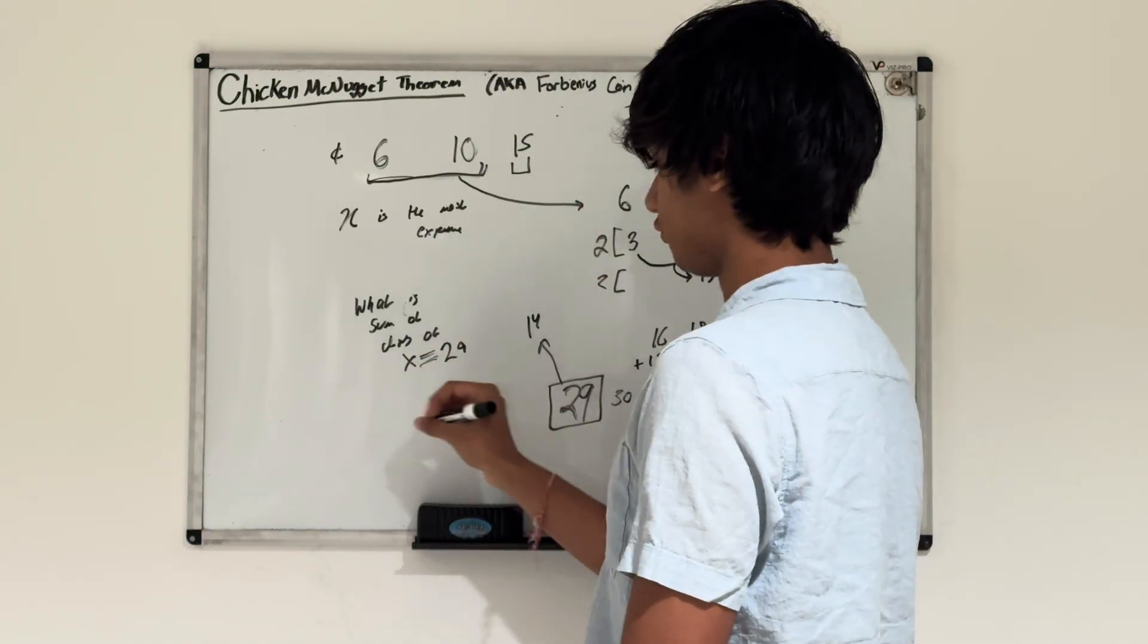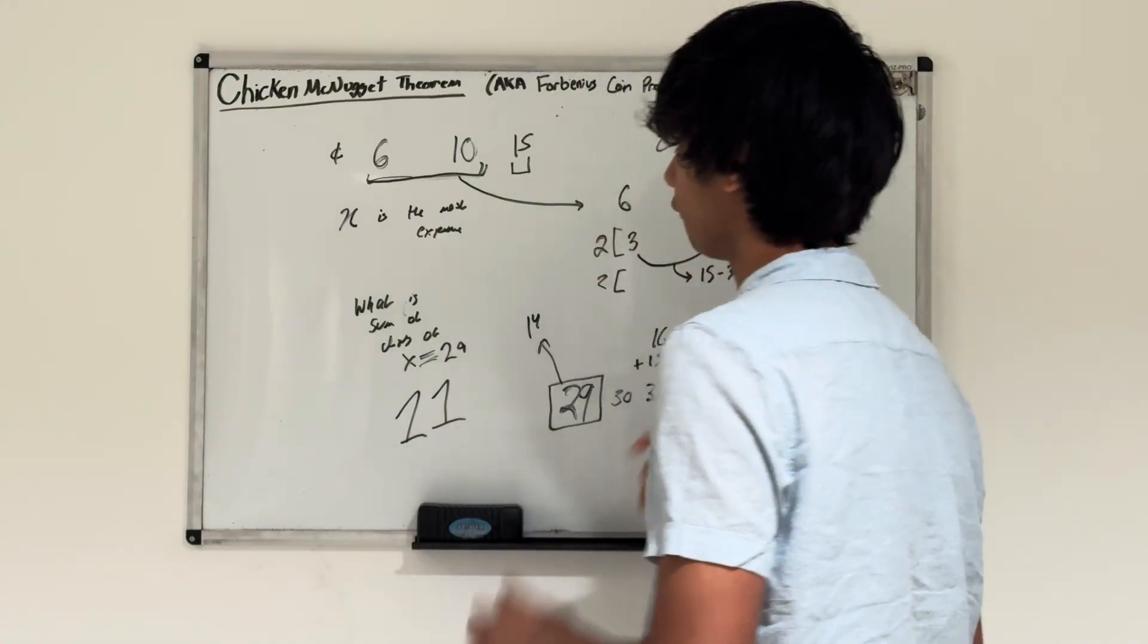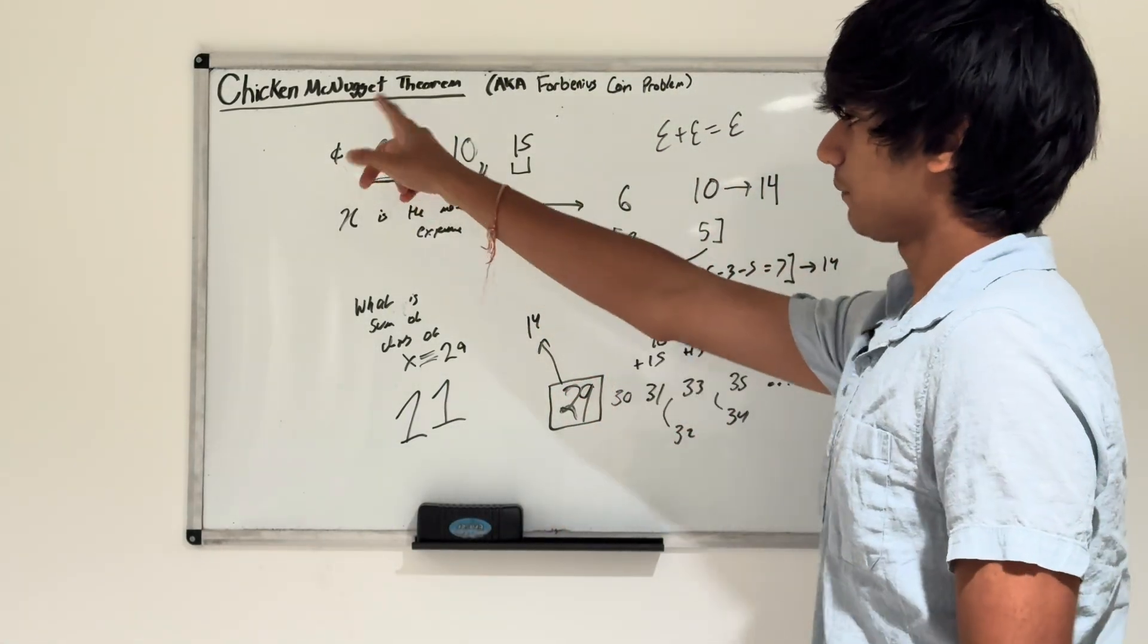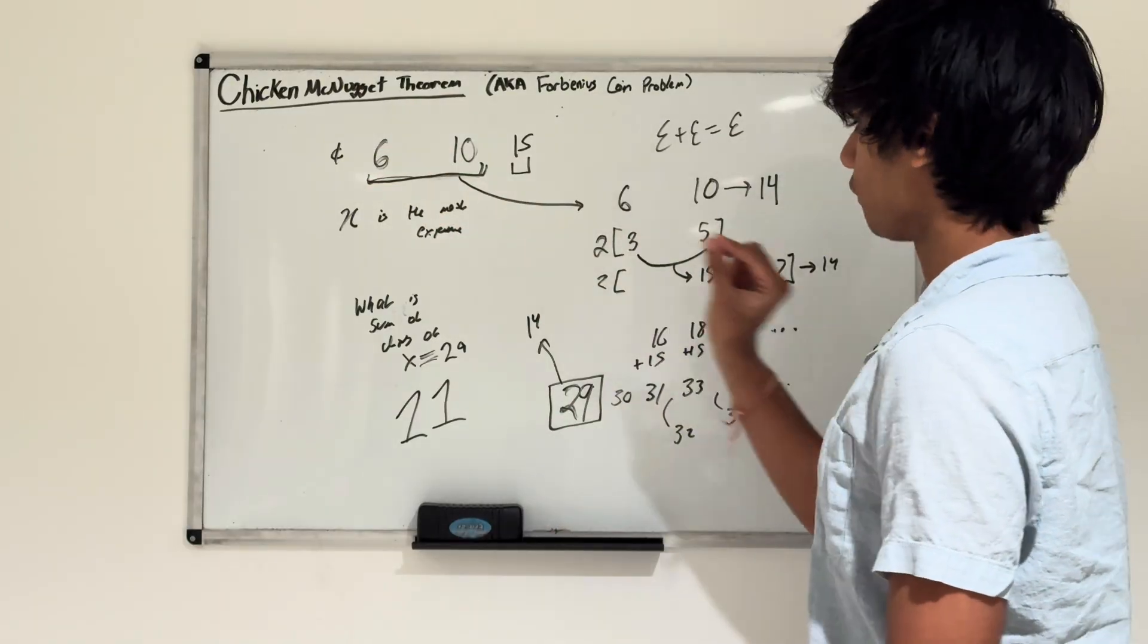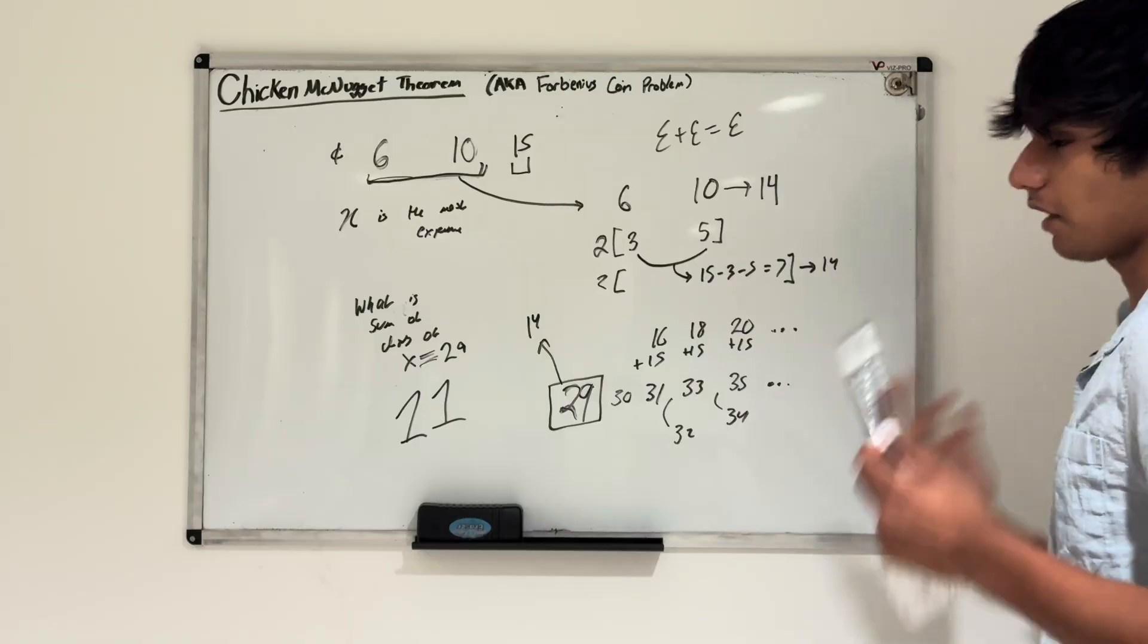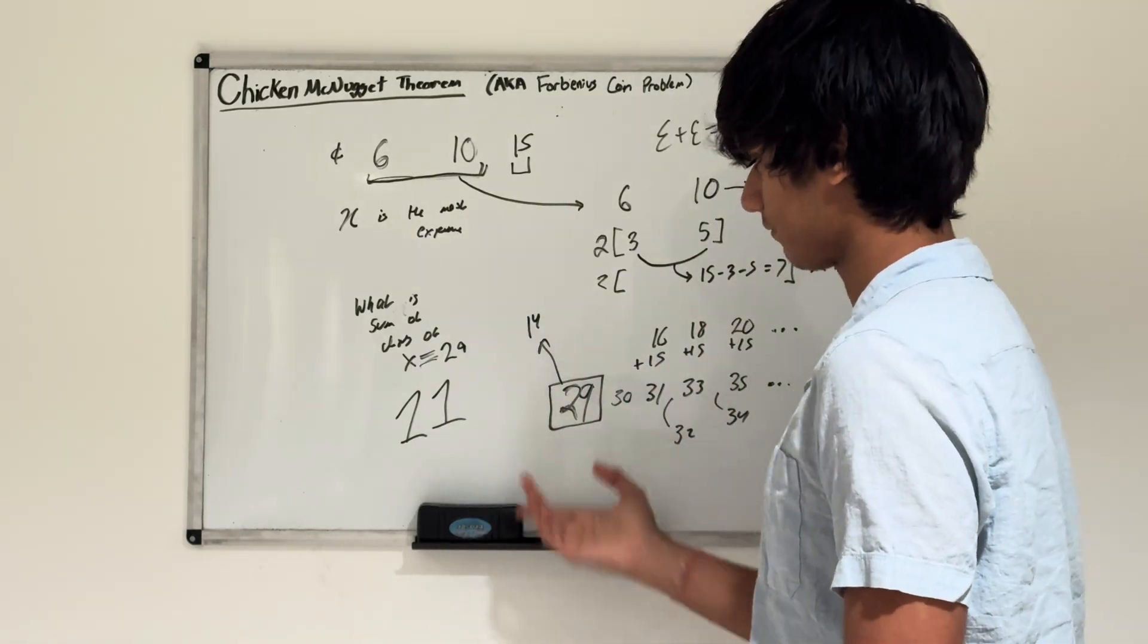The sum of its digits, 2 plus 9, is 11. Therefore, the answer is 11. Even though we couldn't directly use the Chicken McNugget Theorem, by looking at the problem more carefully and breaking it down and taking out the factors, we could use logic and critical thinking to find the answer to be 11.